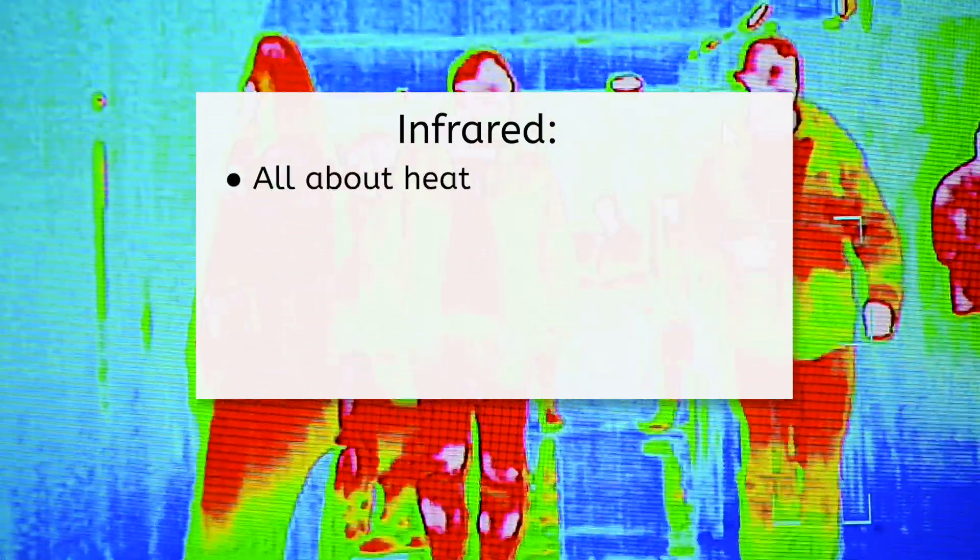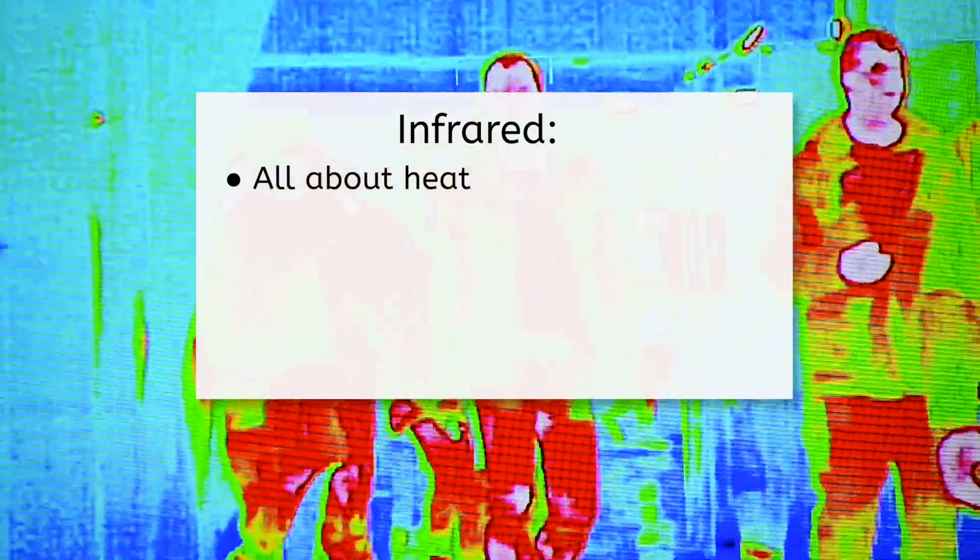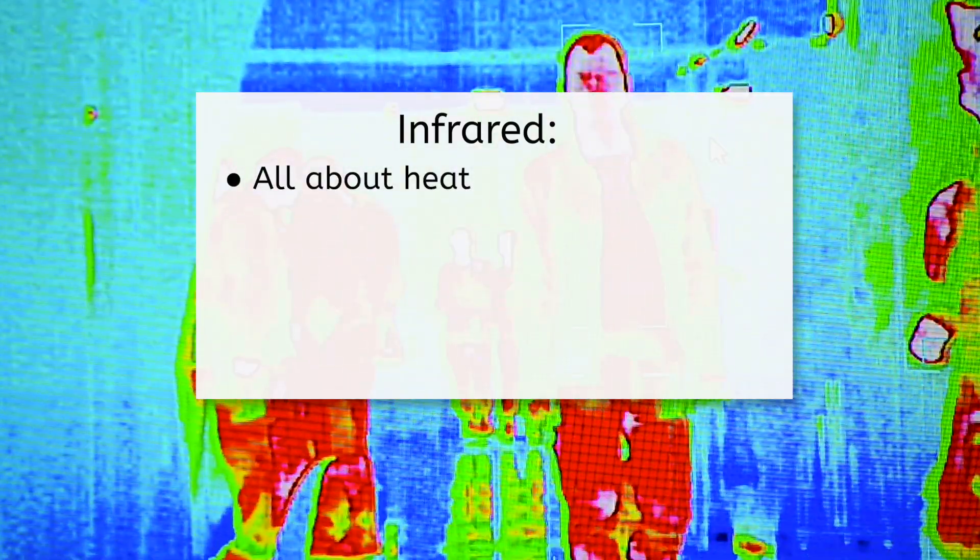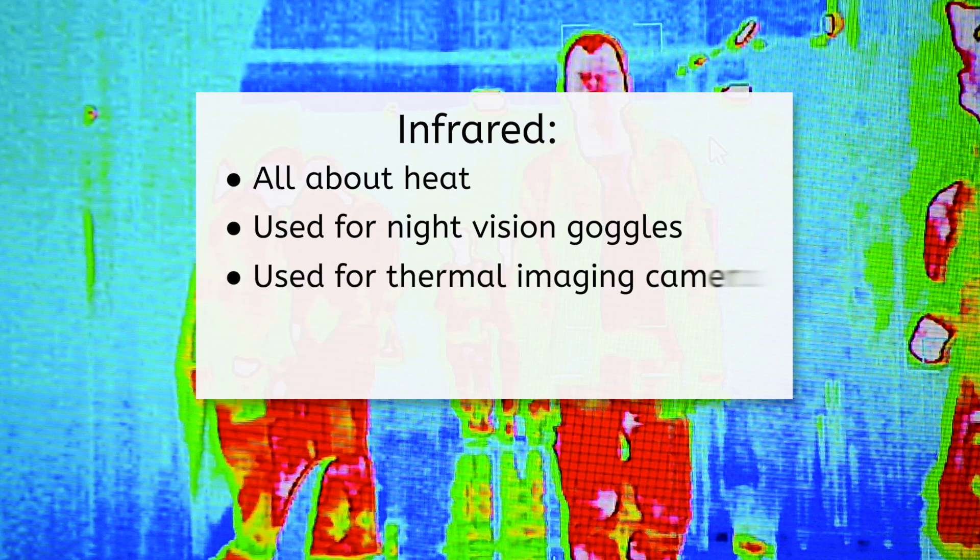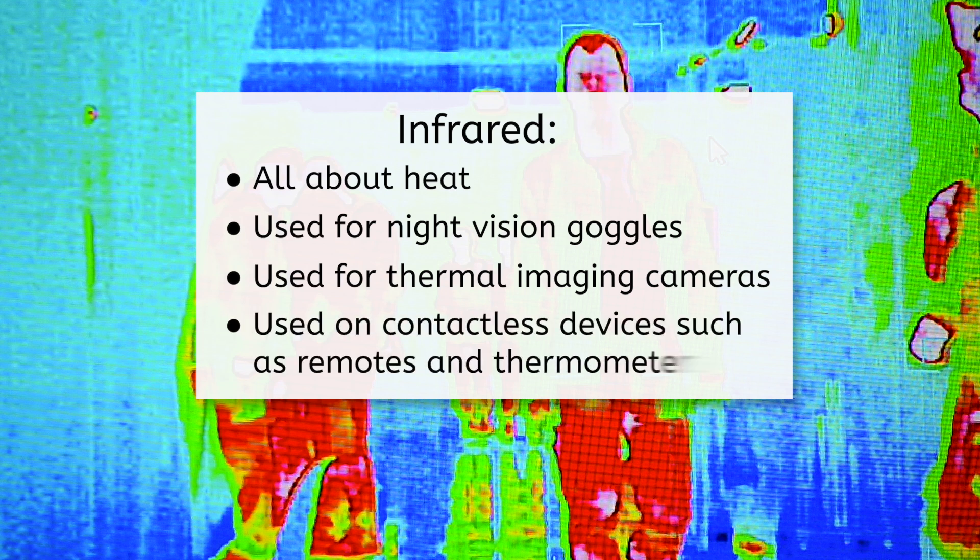Moving on, we find infrared waves, which are all about heat. These waves are emitted by anything warm, including you. Infrared cameras can detect these waves, making them useful for night vision goggles used by campers or wildlife researchers to see animals in the dark. They're also the ones that make thermal imaging possible, which firefighters use to see through smoke. Your remote likely uses infrared waves to communicate with the TV, and they can be used in contactless thermometers.